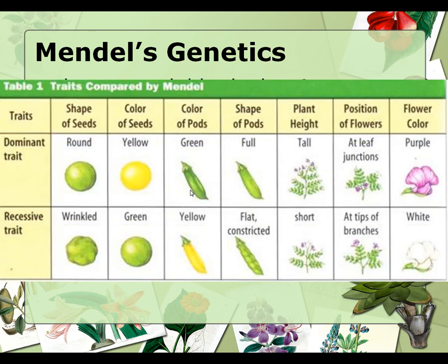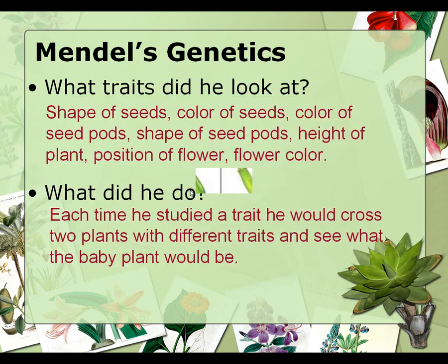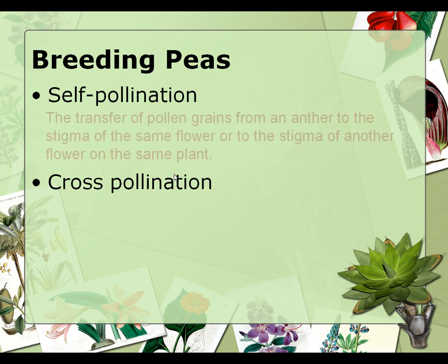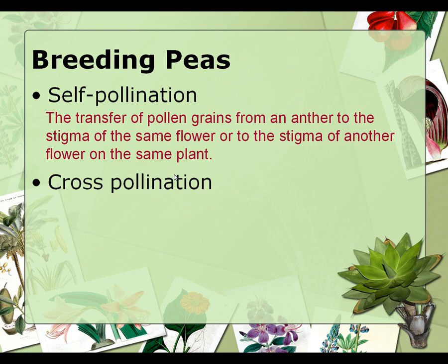Here's a graphic of the different traits and what they looked like. In order to talk about breeding peas, you need to know the difference between self-pollination and cross-pollination. Self-pollination should be pretty self-evident — a plant pollinates itself. In cross-pollination, one plant will pollinate another plant.